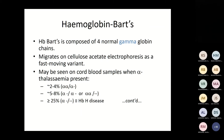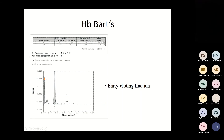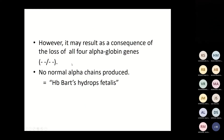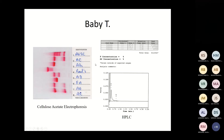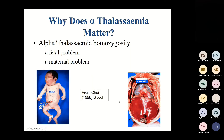Haemoglobin Barts is composed of four normal gamma globin chains and migrates as a fast-moving band on cellulose acetate. It may be seen on cord blood samples: 2–4% with one deletion, 5–8% with two deletions, and around 25% with three deletions. When all four alpha chains are lost, no normal alpha chains are produced and this is classified as Barts hydrops fetalis. A baby born with hydrops fetalis has no haemoglobin A, no haemoglobin A2, and no haemoglobin F, and presents with hepatosplenomegaly.